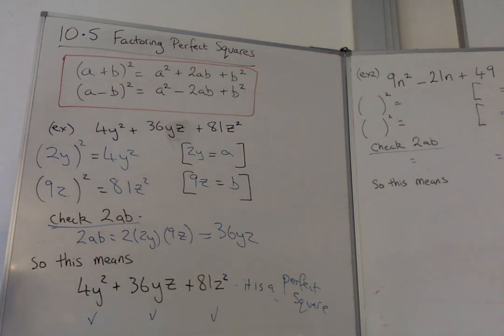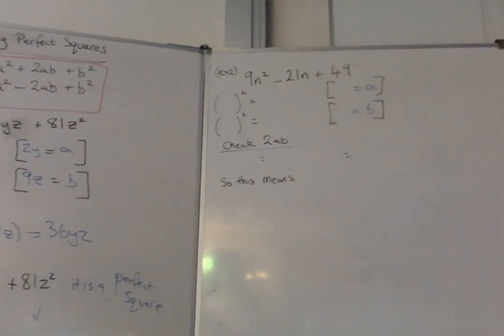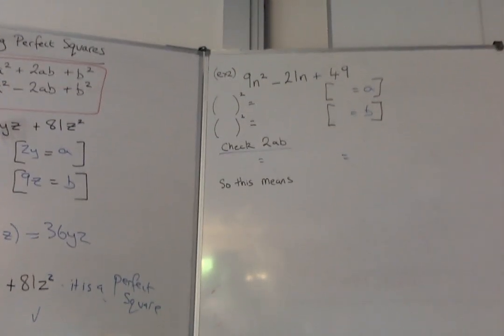So that's the first example. If you want, you can copy that down first before you watch the second. Because the second example, you're going to try and do yourself. And you're going to test again now and see if this one is a perfect square.